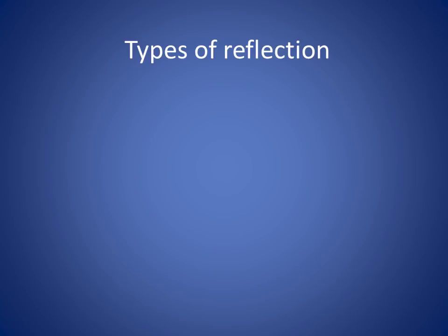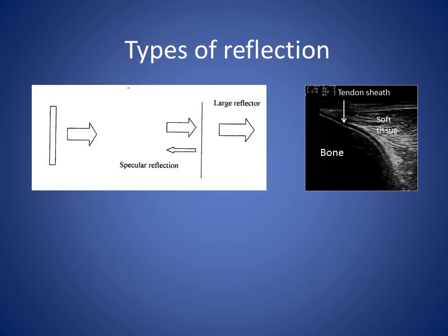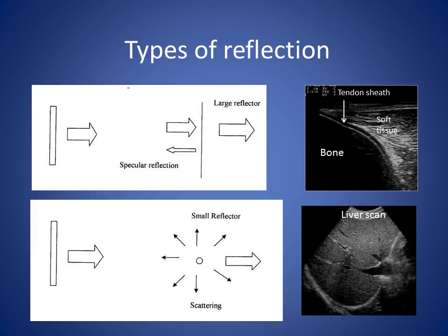Two distinct types of reflection occur that give an ultrasound scan its characteristic image. Specular reflection is responsible for the bright appearance of fibrous structures such as tendons and of boundaries between different tissues. It occurs when the sound wave meets a distinct surface that is significantly larger than the wavelength of the ultrasound. The amount of sound reflected at the boundary between two different tissues depends on how marked the difference is in their acoustic impedance. Scattering gives rise to the characteristic texture of the image seen within soft tissue. Scattering occurs at the small, subtle boundaries that exist within tissues, where small amounts of energy are absorbed and retransmitted in all directions, as if from a point source, in a manner that loosely resembles a pebble dropped into a pond.